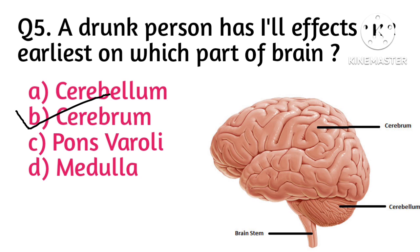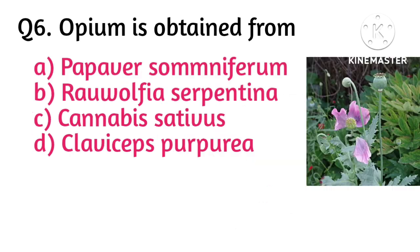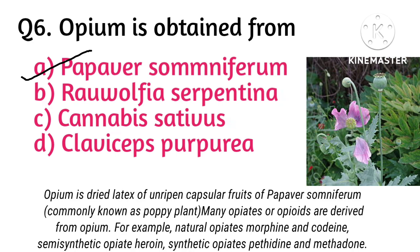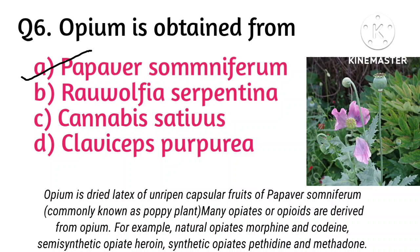When a person is intoxicated, the first part of the brain to be affected is the cerebrum. Next question: opium is obtained from — option A is correct, that is Papaver somniferum. Opium is obtained from Papaver somniferum, commonly called the poppy plant, from its unripe fruit. Opium has analgesic, narcotic, and sedative effects and is a depressant of the central nervous system.